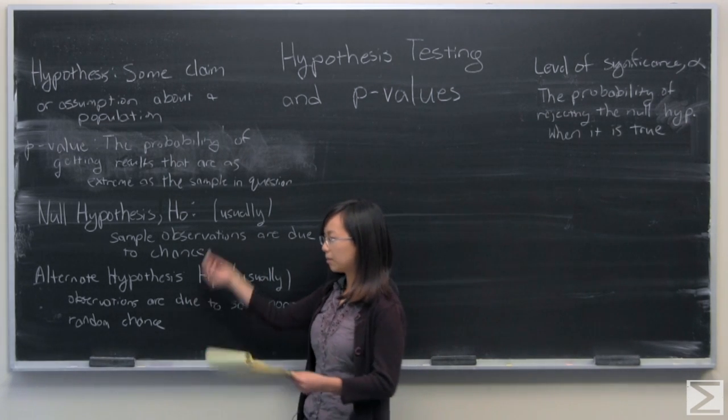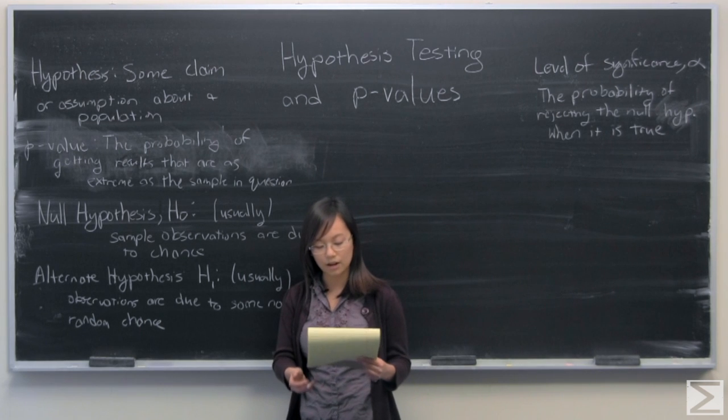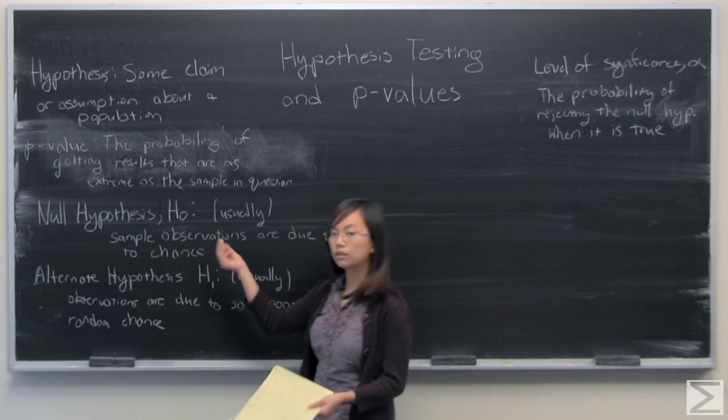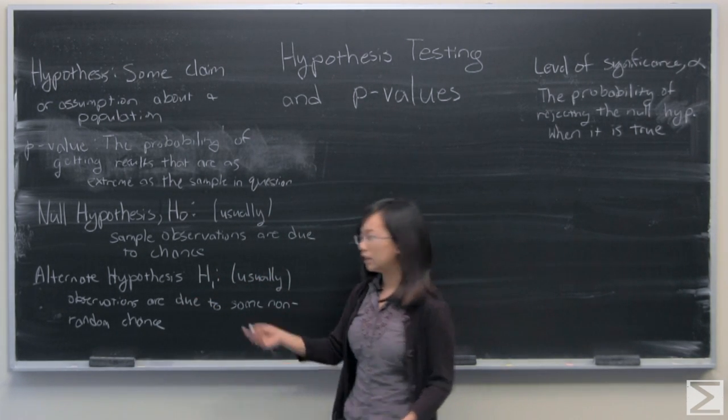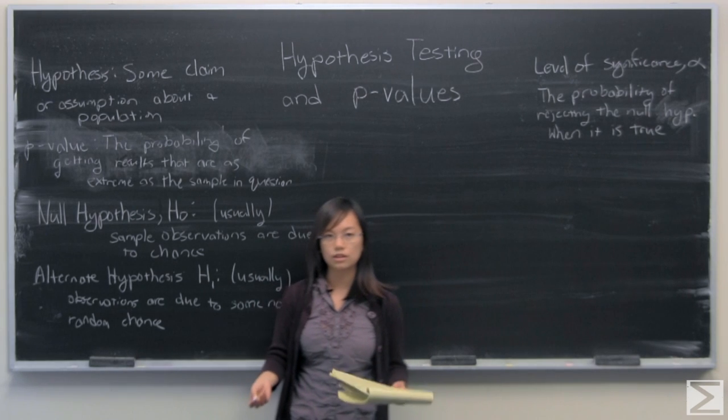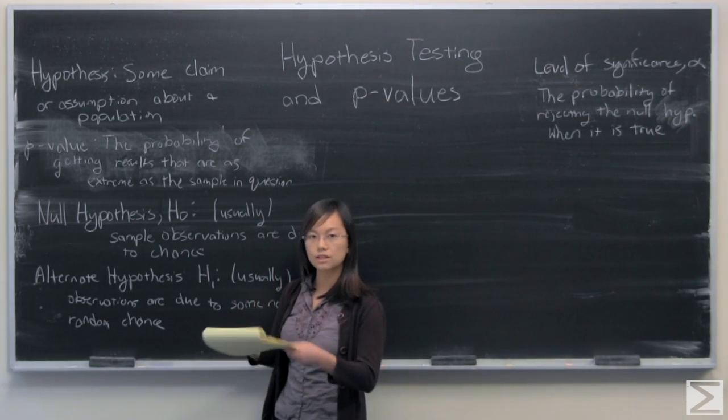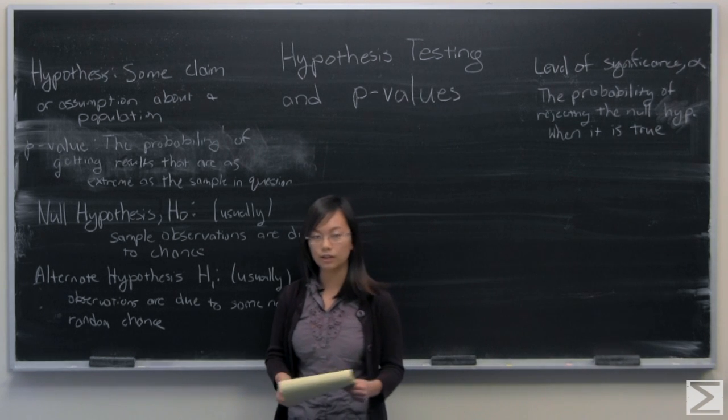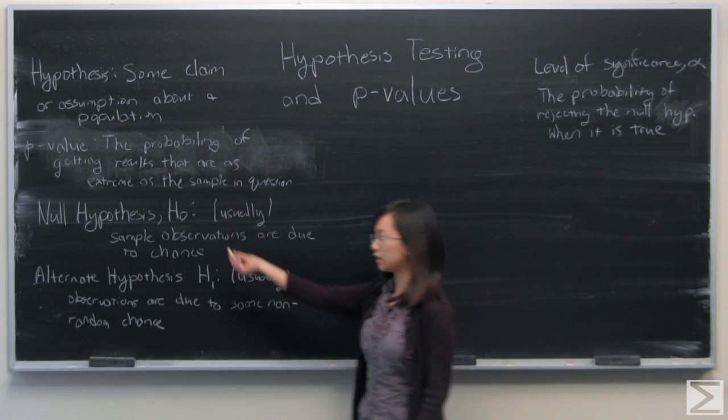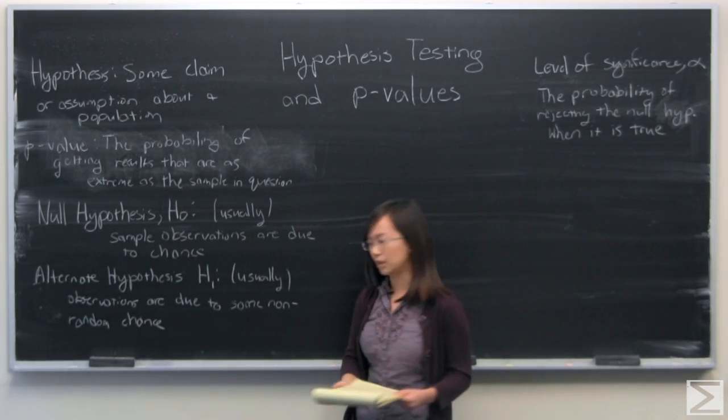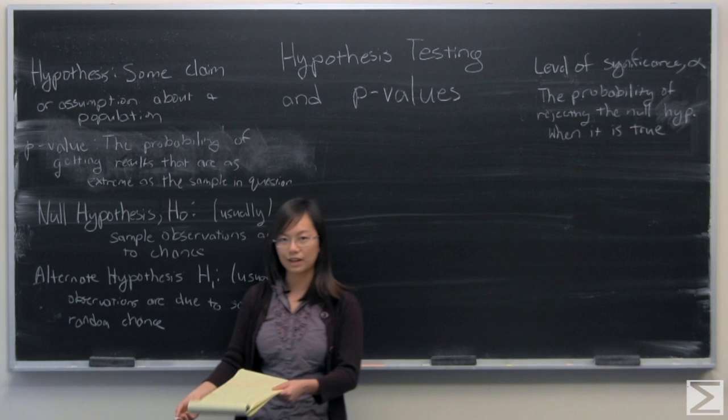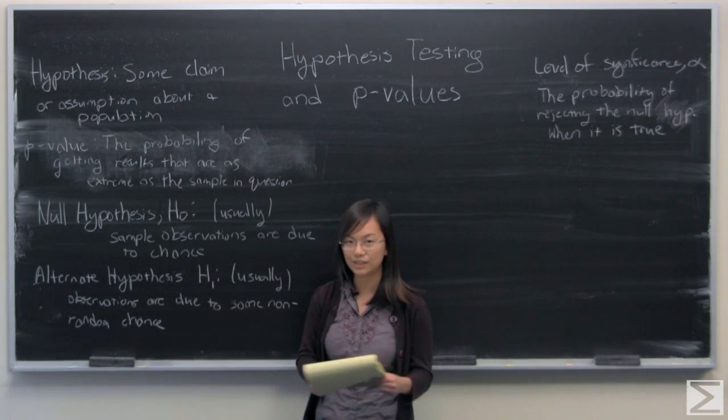Two very important terms that come along with the p-test and hypothesis testing are null hypothesis and alternate hypothesis. And I've written usually, but it's almost always. But when you make a null hypothesis, it's something you want to reject. It is basically saying that the simple observations are due to random chance. And if you reject your null hypothesis, then generally you're saying that no, this isn't due to random chance. There's actually some kind of cause here, and that's often important to do in the real world.